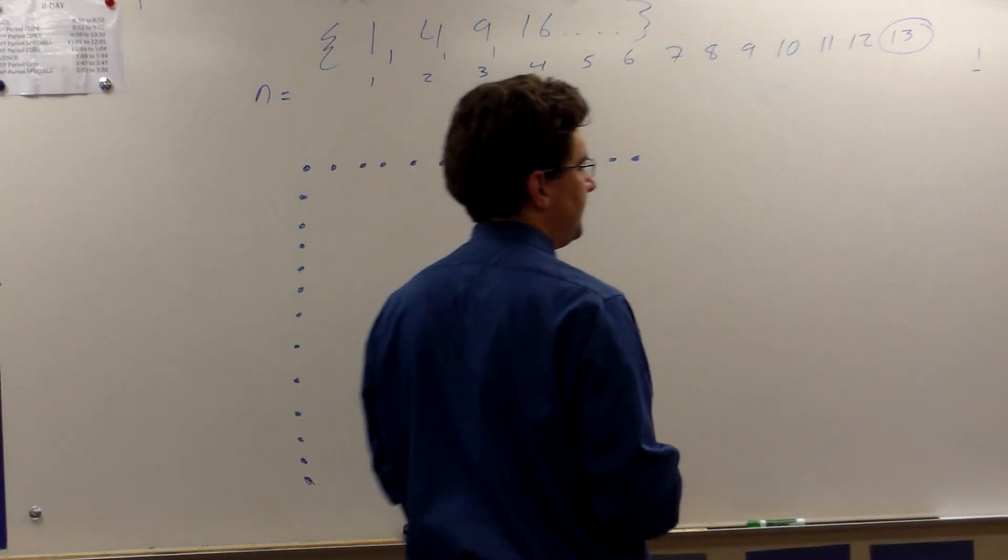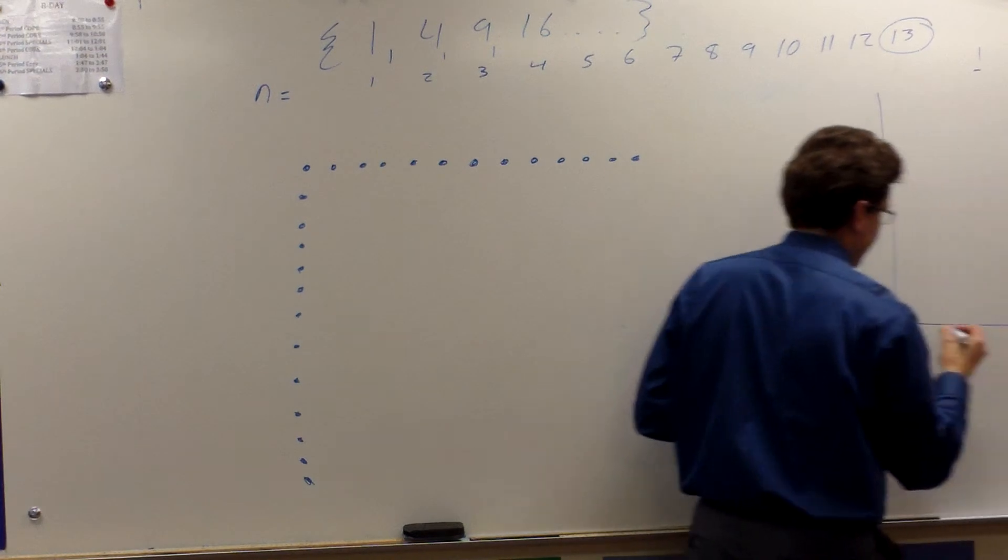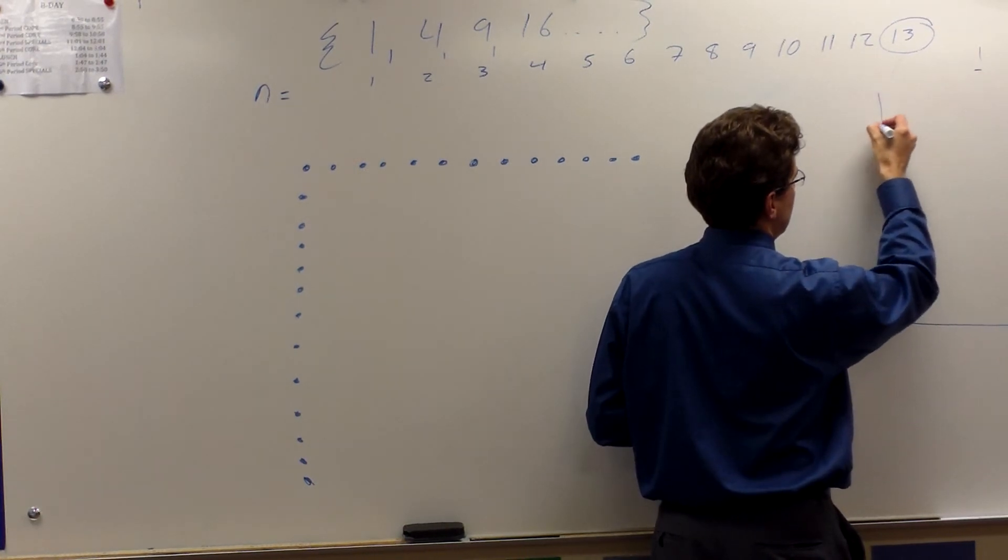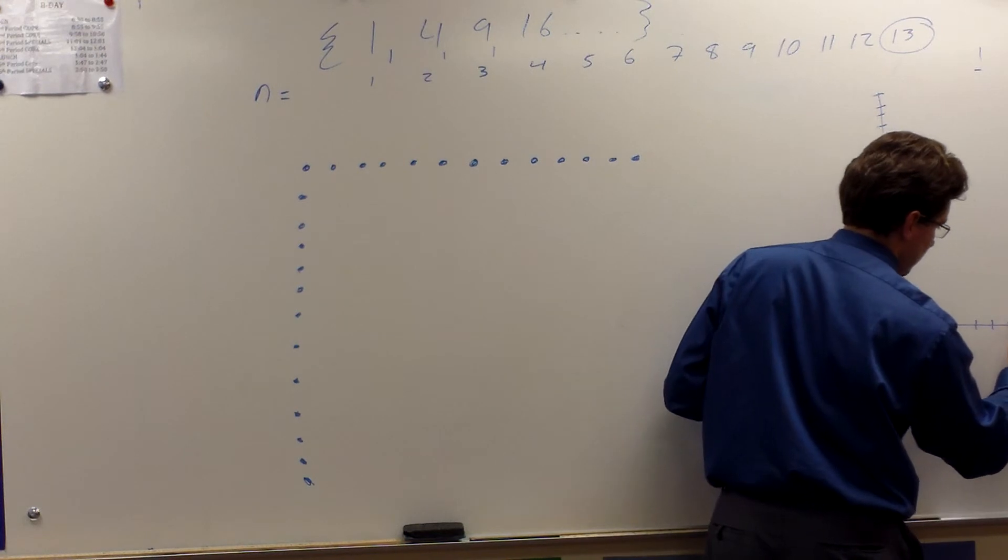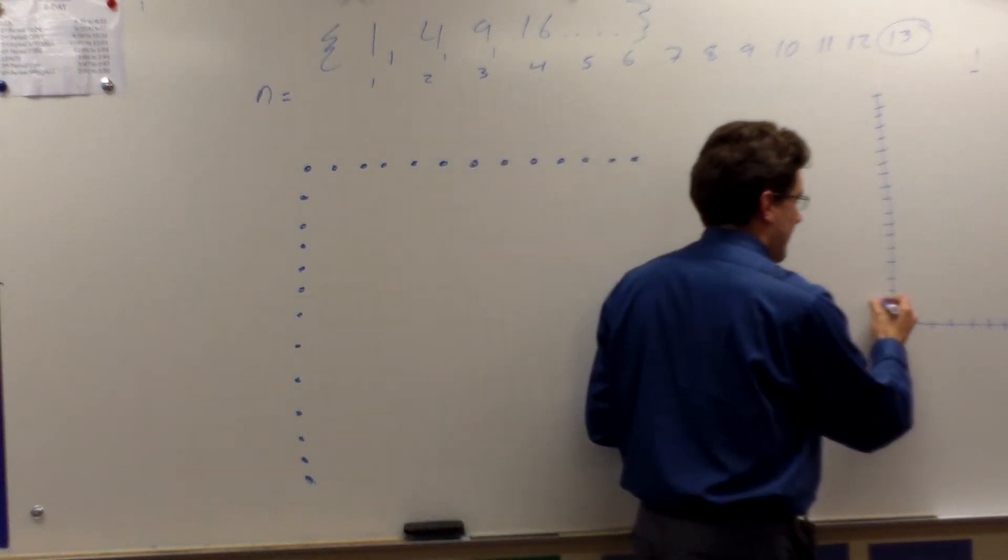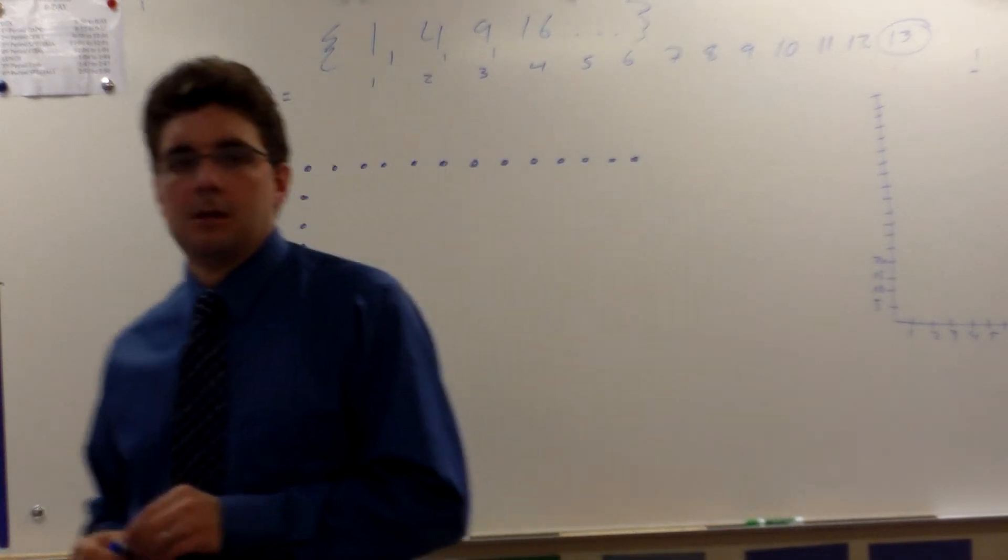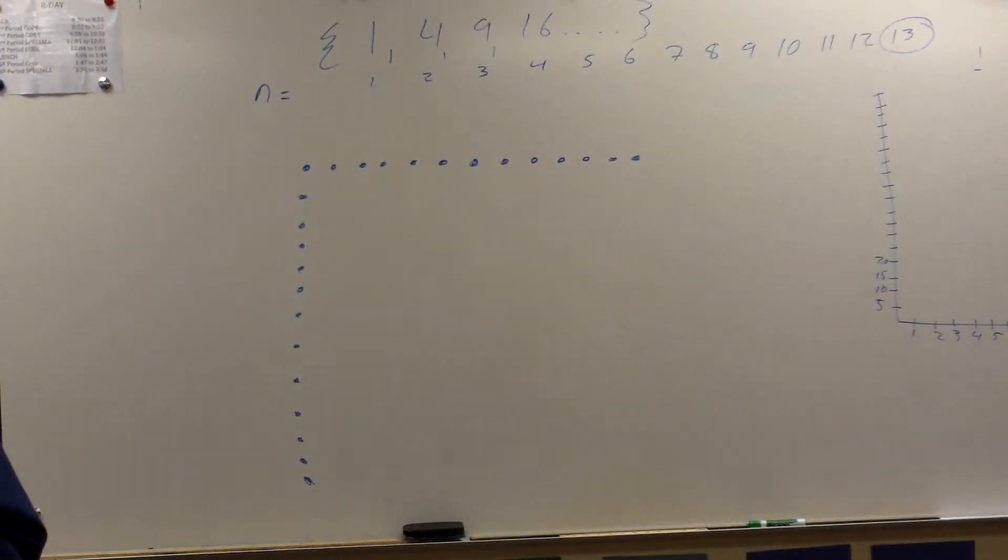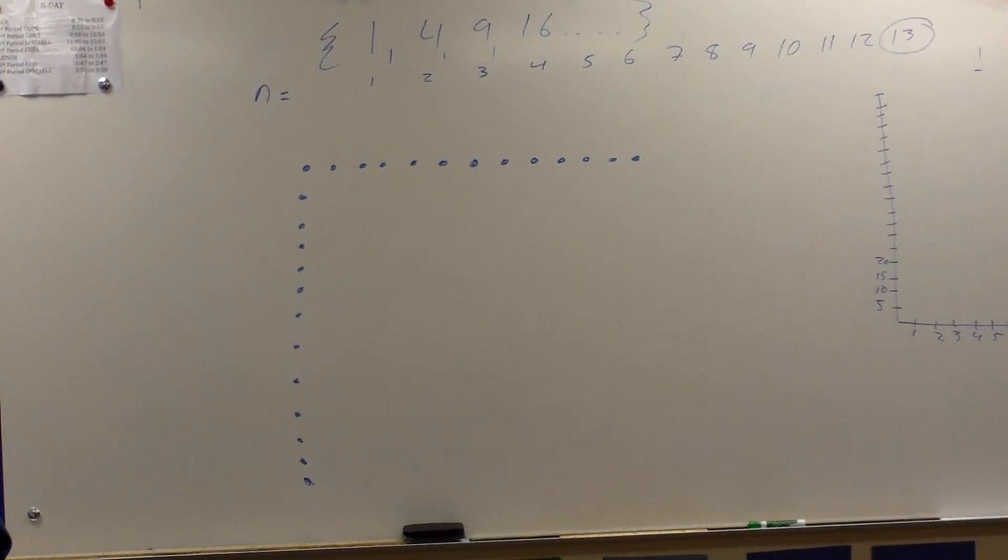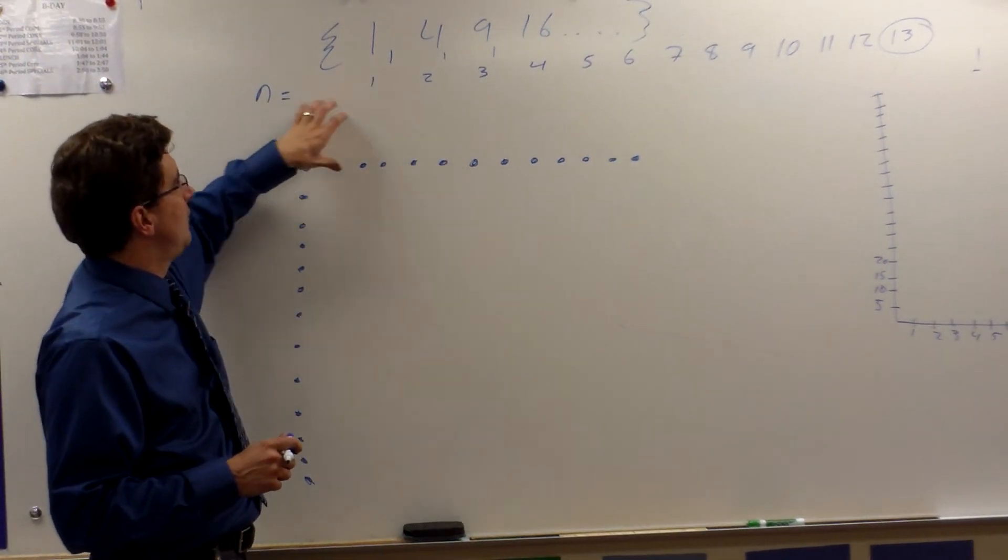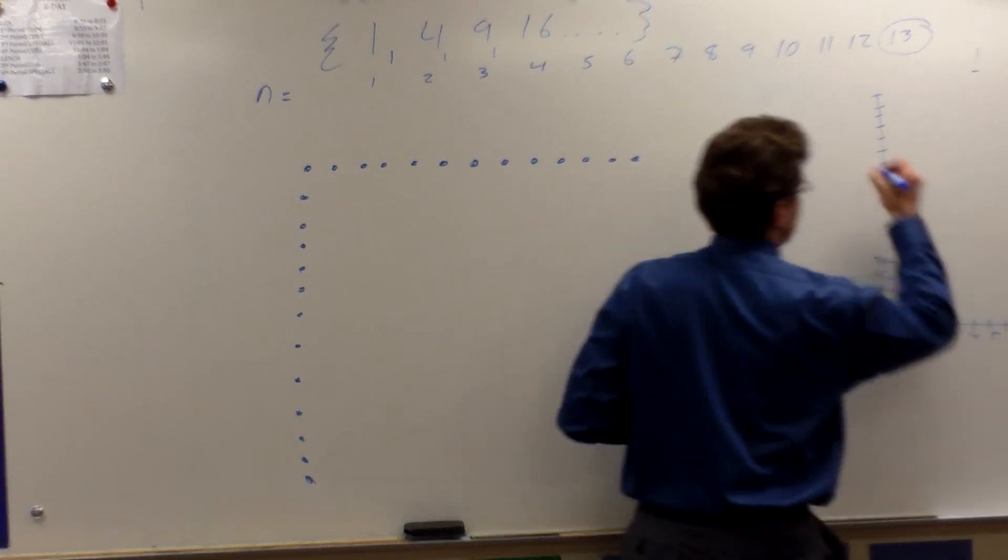If we're to graph this, if we're to graph this thing, and we go up by fives. If we're to graph this, and thinking back to this concept of this is our n, so we're going to call our x-axis, in this case, n, and s of n.